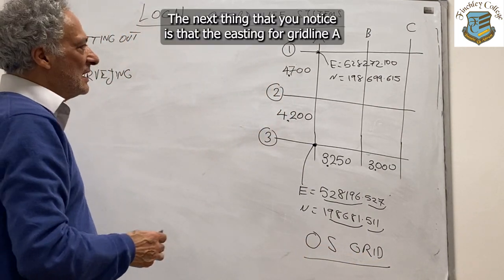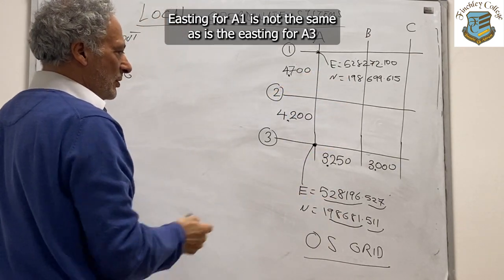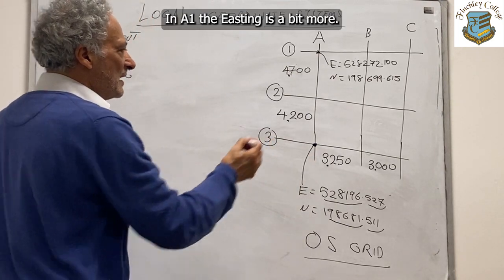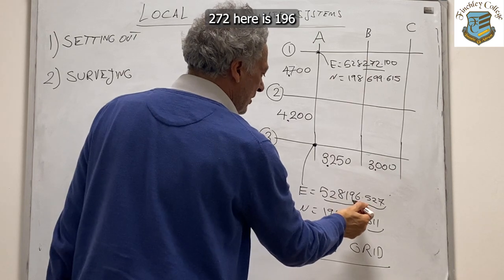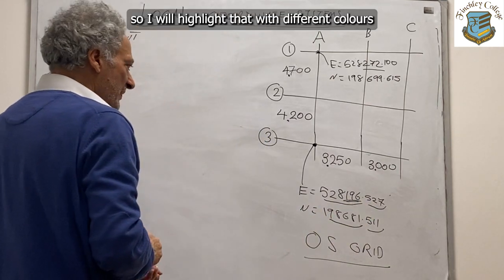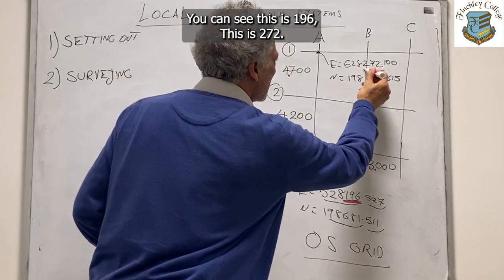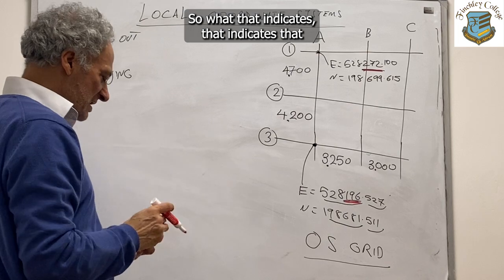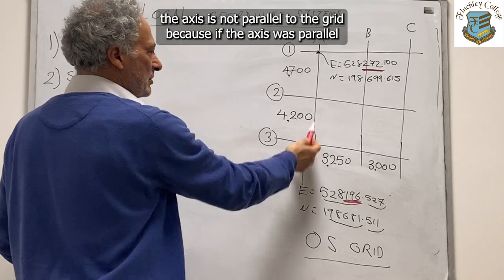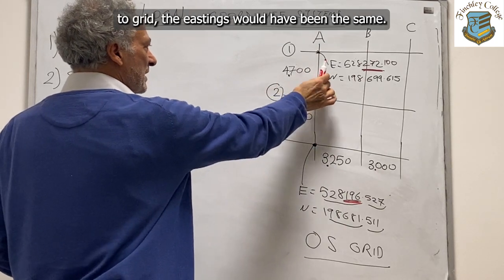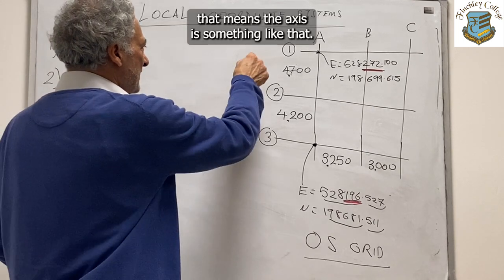The next thing you notice is that the easting for grid line A1 is different to A3. In A1 the easting is 272, here it is 196. You can highlight that with a different color — this is 196, this is 272. That indicates that the axis is not parallel to the grid, because if the axis was parallel to the grid the eastings would have been the same.